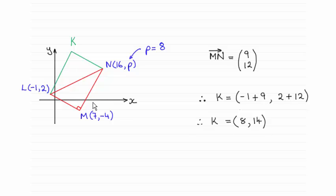When you're doing something like this, it's a great idea to just use vectors. You'll notice that what I've done is I've worked out the vector m to n. Going from 7 to 16 is clearly 9 units across, and then going from minus 4 up to p, which we worked out was 8 units, is going to be a total distance of 12 units.